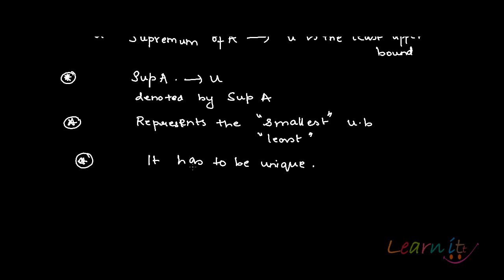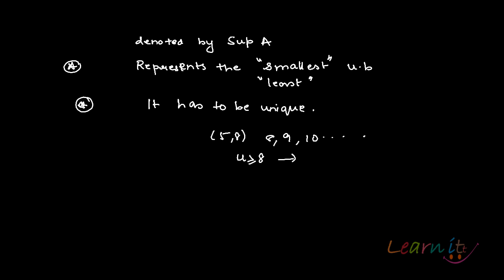In the definition of upper bounds, we said that any set can have a lot of upper bounds. When we talk about the open set (5, 8), 9 is an upper bound, 8 is an upper bound, 10 is an upper bound — anything greater than or equal to 8 would be an upper bound. But which is the least upper bound? 8 is the least upper bound.